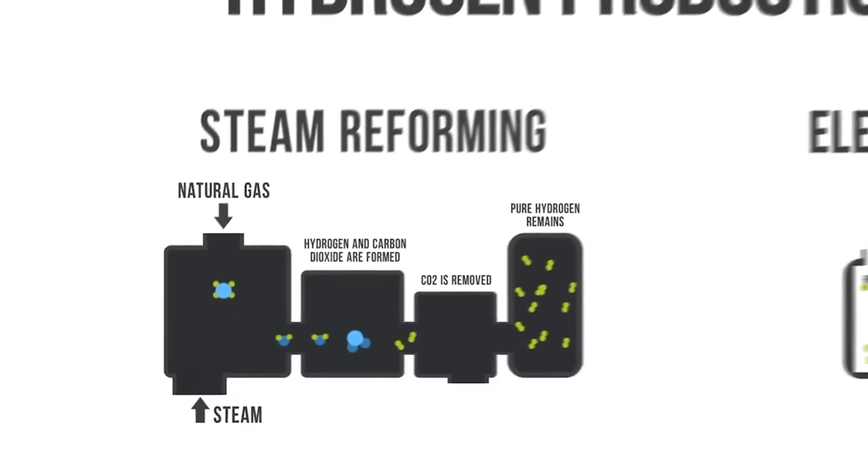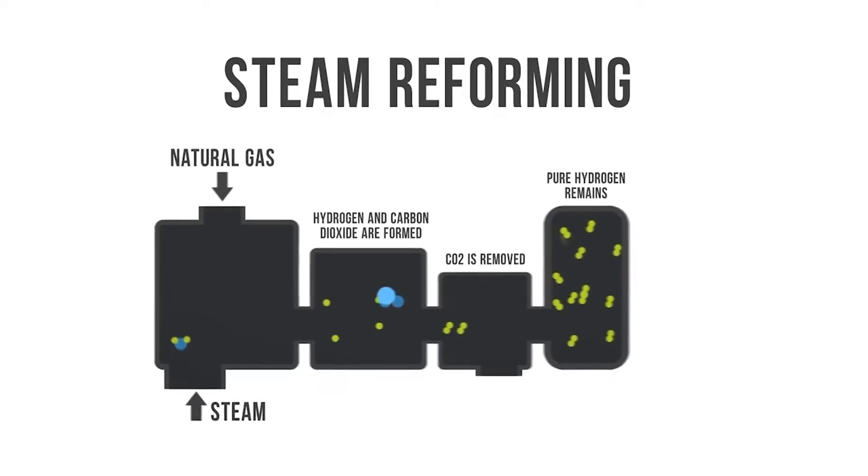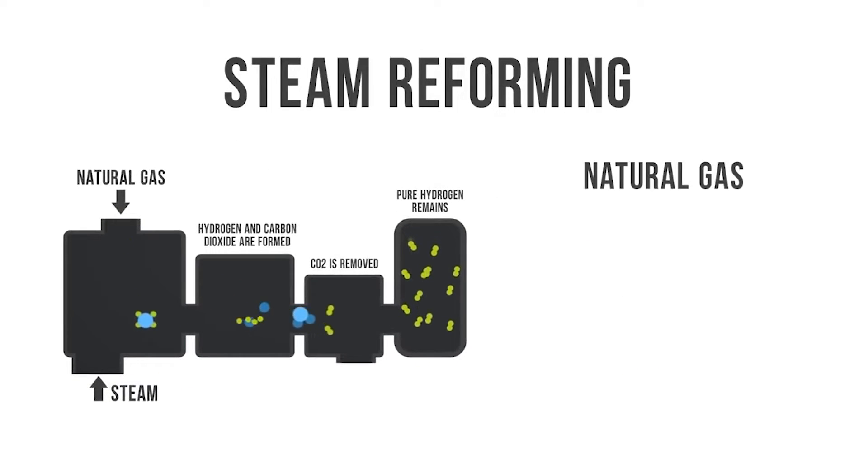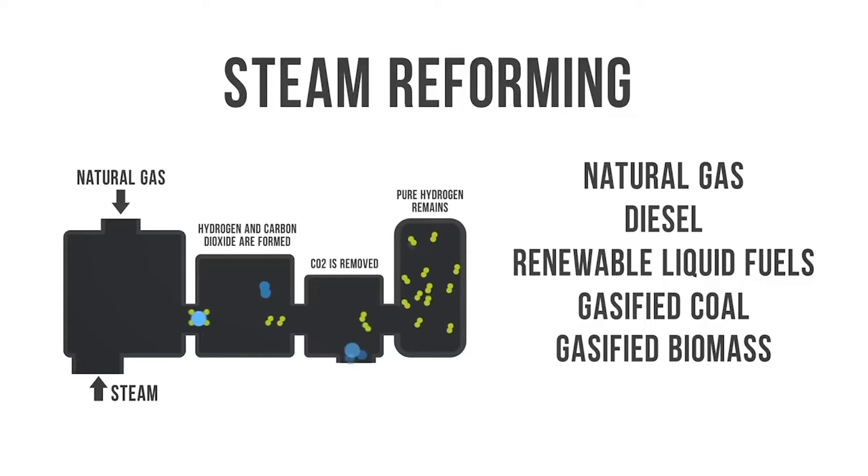So how do we produce hydrogen? Well the most common way at this time is through the process of natural gas reforming. But producing hydrogen in this manner has some serious downsides—it produces harmful byproducts named carbon dioxide and carbon monoxide. I'm not going to go into crazy depth but let's just say this isn't the greenest way of producing it.